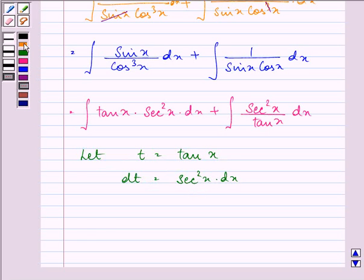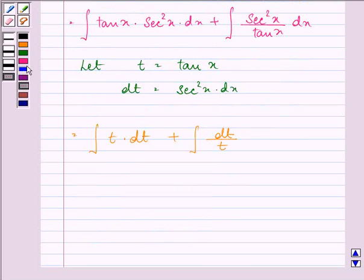So on substituting we have t into dt plus dt over t, that is equal to here integral of t into dt is t square divided by 2